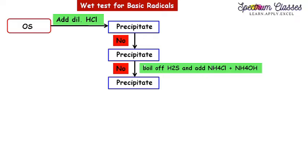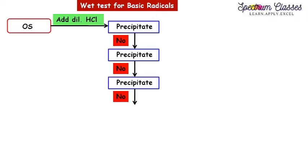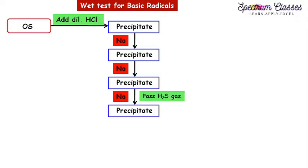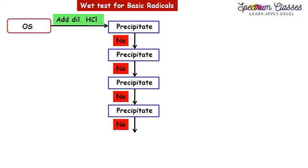If you get a precipitate after adding NH₄Cl and NH₄OH, it suggests group 3 is present; if no precipitate, group 3 is absent. For group 4, the group reagent is H₂S gas in the presence of ammonium hydroxide — which has already been added for group 3. So now we pass H₂S gas or add sodium sulfide to this solution. If we get a precipitate, group 4 is present; if no precipitate, group 4 is also absent.